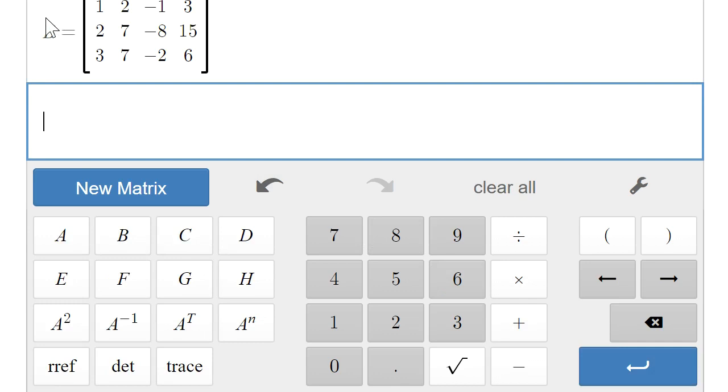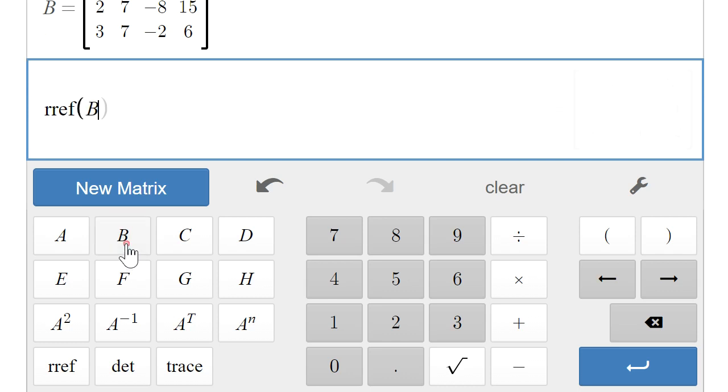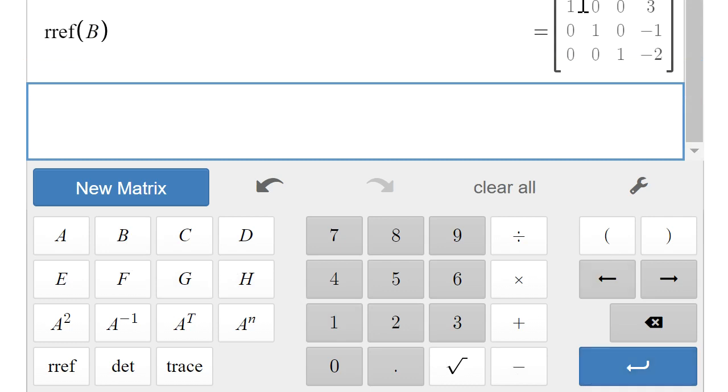Now if you notice, it called that matrix B. So when we do RREF again, we're just going to call on matrix B this time. So type B, hit enter, and at the top right we have our answer.